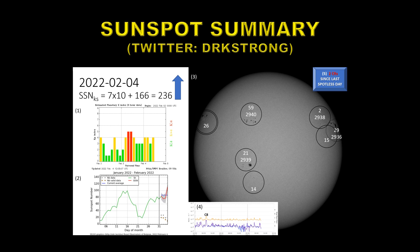Panel 2 shows that the sunspot number has suddenly jumped with this new region coming over the northeast limb. That region has now been numbered 2941. The sunspot groups are either growing or stable.